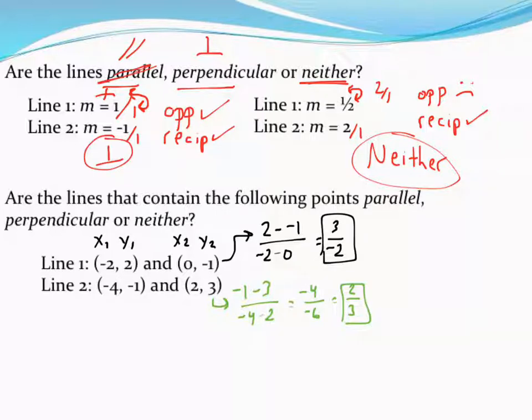So there's the two slopes I need to compare. The first line was 3 over negative 2 or negative 3 halves. The second line has a slope of 2 thirds. Make sure you simplify it. I can see, again, they're not parallel. They're not the same number. To be perpendicular, two things must be true.